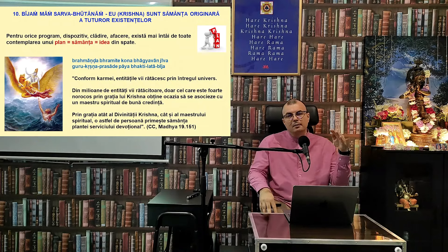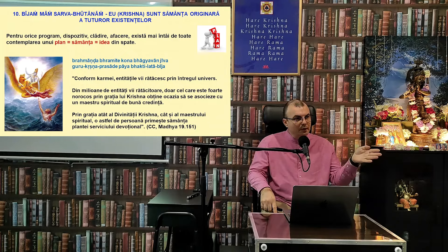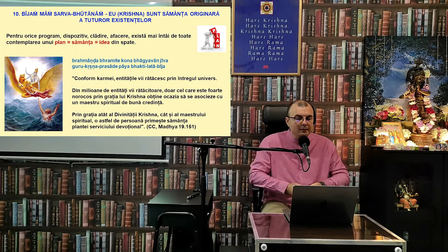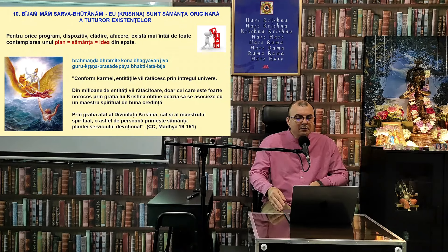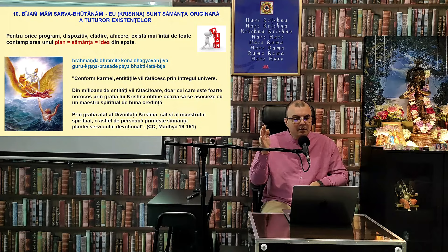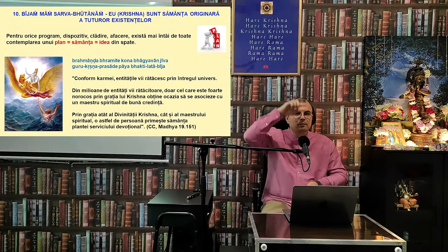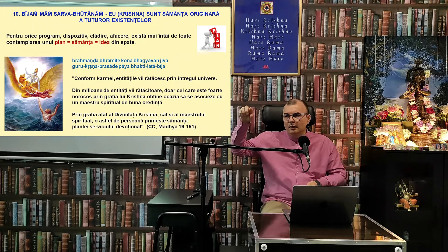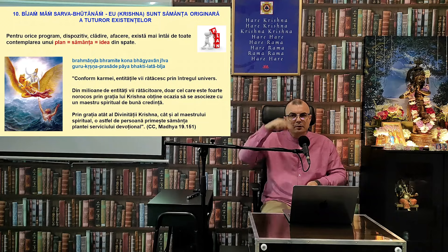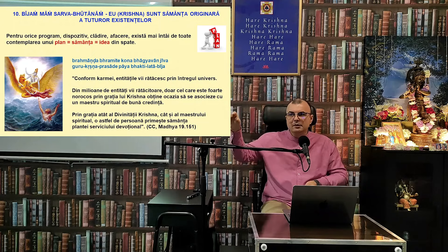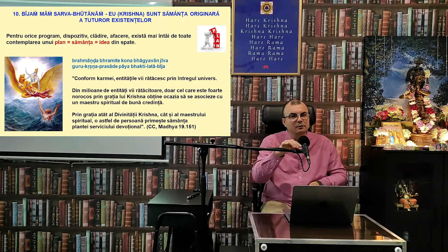Krishnadasa Kaviraja Goswami spune în Caitanya Caritamrita: Brahmanda bhramite kona bhagyavan jiva, guru-krishna-prasade paya bhakti-lata-bija. Conform karmei, entitățile vii rătăcesc prin întregul univers. Unele sunt elevate în sistemele planetare superioare, altele coboară în cele inferioare — ca o caruselă, astăzi suntem sus, mâine la mijloc, poi jos. Cam asta se întâmplă cu entitatea vie în cadrul universului — noi hoinerim prin univers.